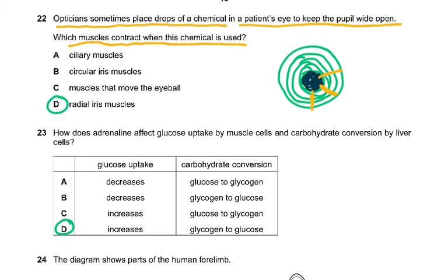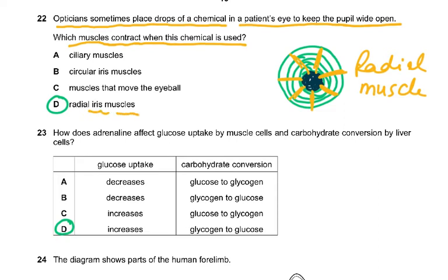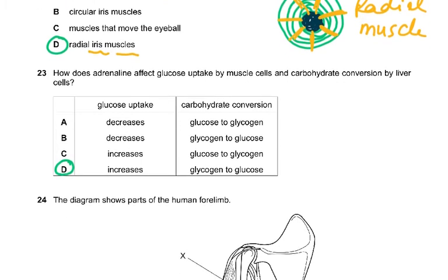When the circular muscles contract, the pupil constricts — the pupil becomes smaller. But since we need to keep the pupils wide open, the radial muscles are going to contract to make the pupil dilate. The words we use are constrict and dilate. So it will be radial iris muscles. Do not say ciliary muscles — that would be wrong. Ciliary muscles control the shape of the lens.